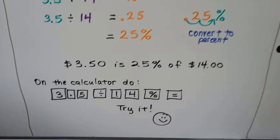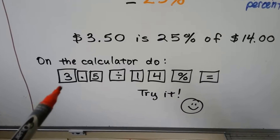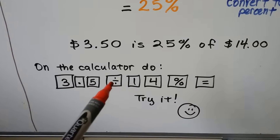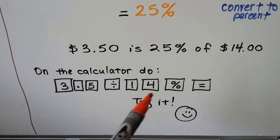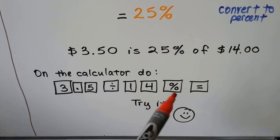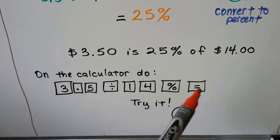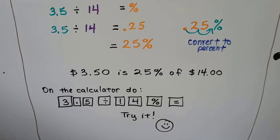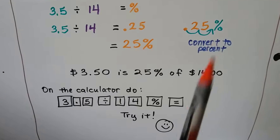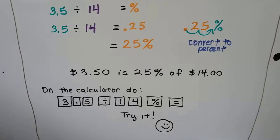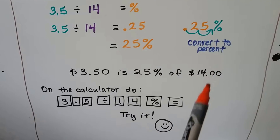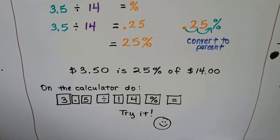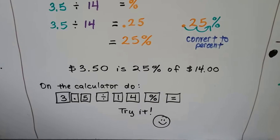We can also do this on the calculator: enter 3, the decimal point, 5, the division sign, then 1, then 4, then hit the percentage key, then equals, and you're going to get 0.25. You still have to convert it to a percentage — take the decimal point off and put a percentage sign when writing the answer.